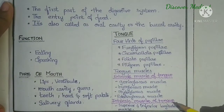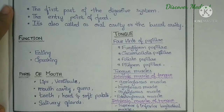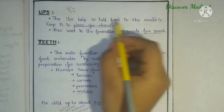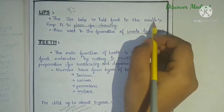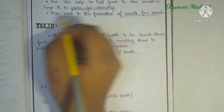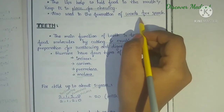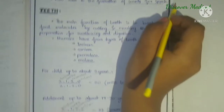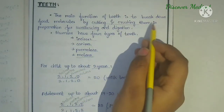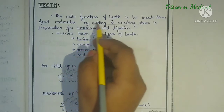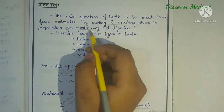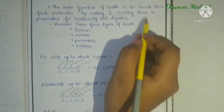The intrinsic muscles include superior and inferior longitudinal muscles. Both the upper lip and lower lip help to hold food in the mouth and keep it in place for chewing, and are also used in the formation of words for speech. The main function of teeth is to break down food molecules by cutting and crushing them in preparation for swallowing and digestion.